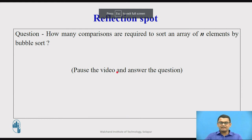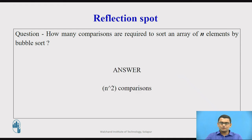Now at this point in time, I want you to pause the video and ponder on the question: how many comparisons are required to sort an array of n size by bubble sort? Pause the video and try to answer the question. So if you carefully see the algorithm and the pseudocode, you will come to know that we will require n squared comparisons to sort an array of size n.